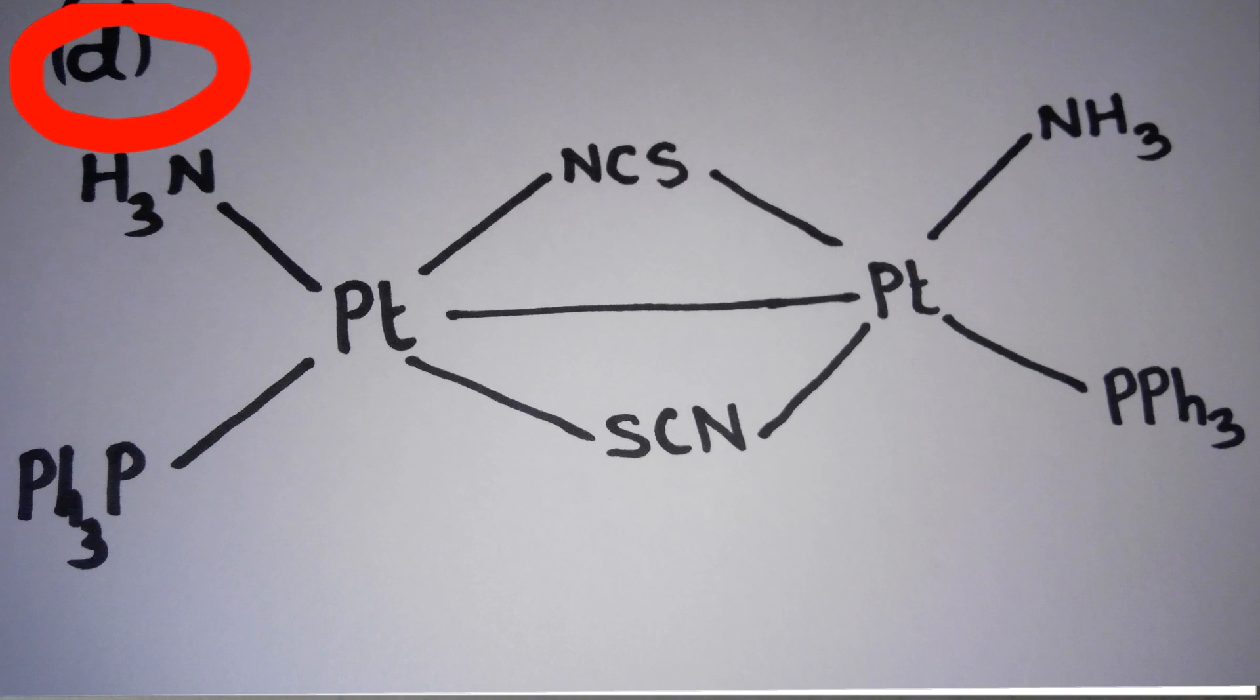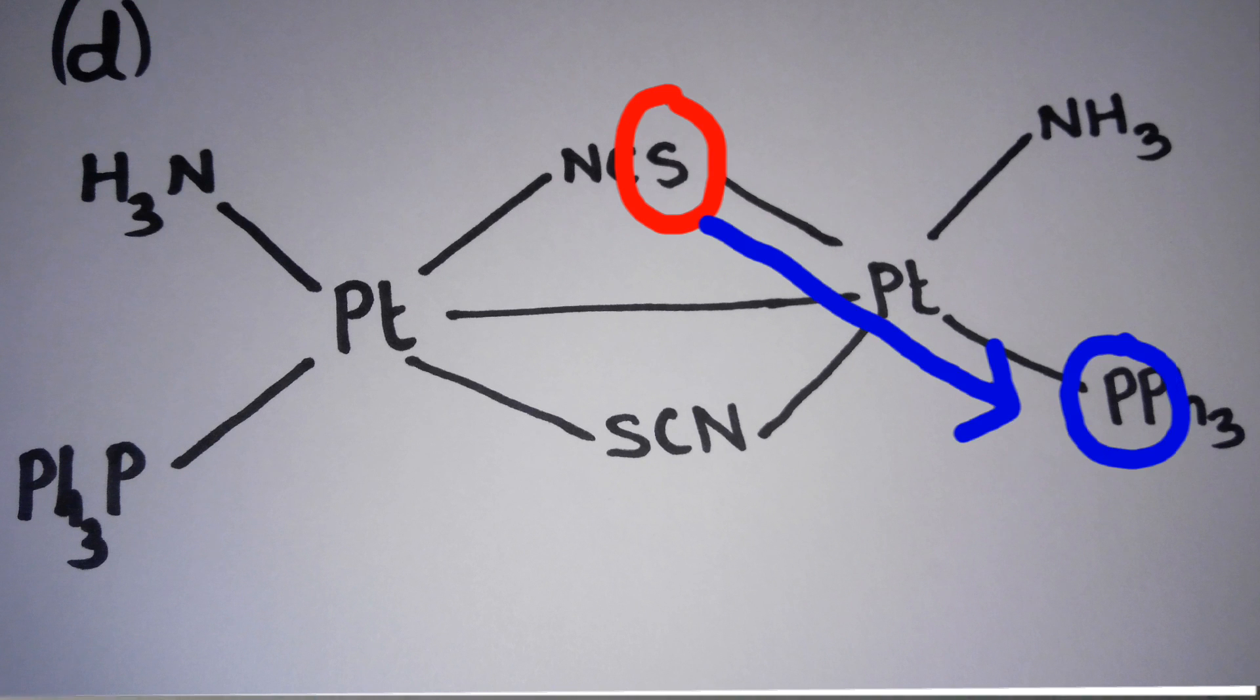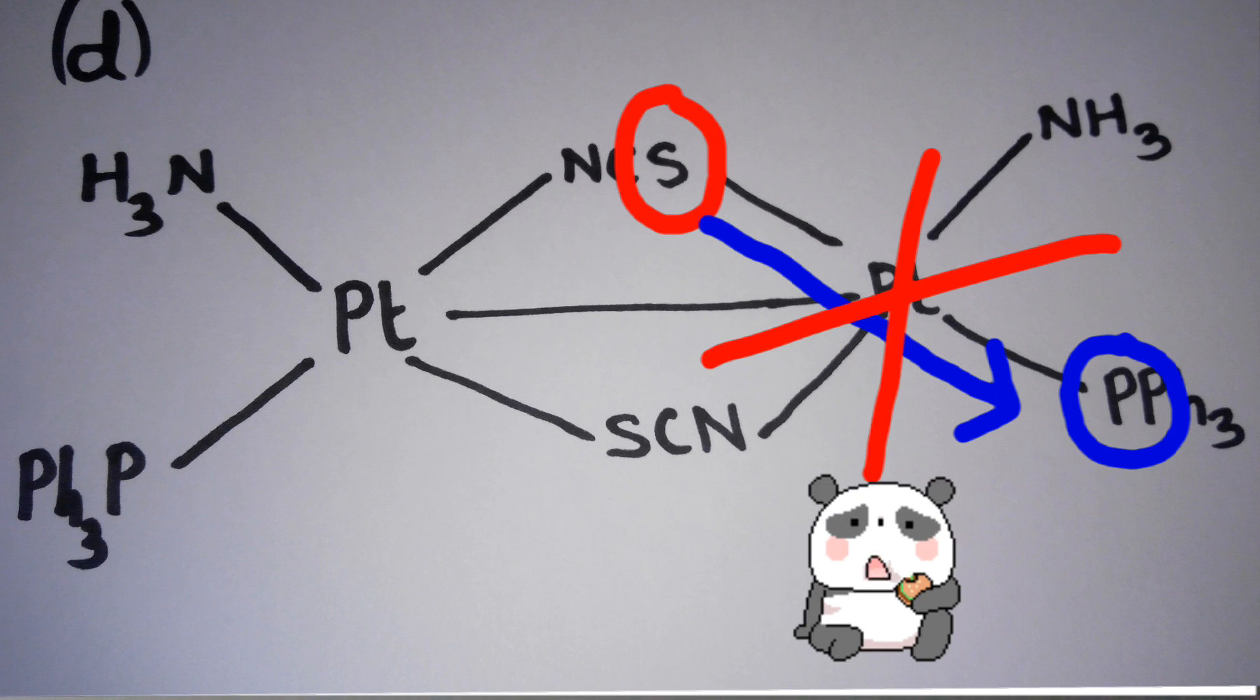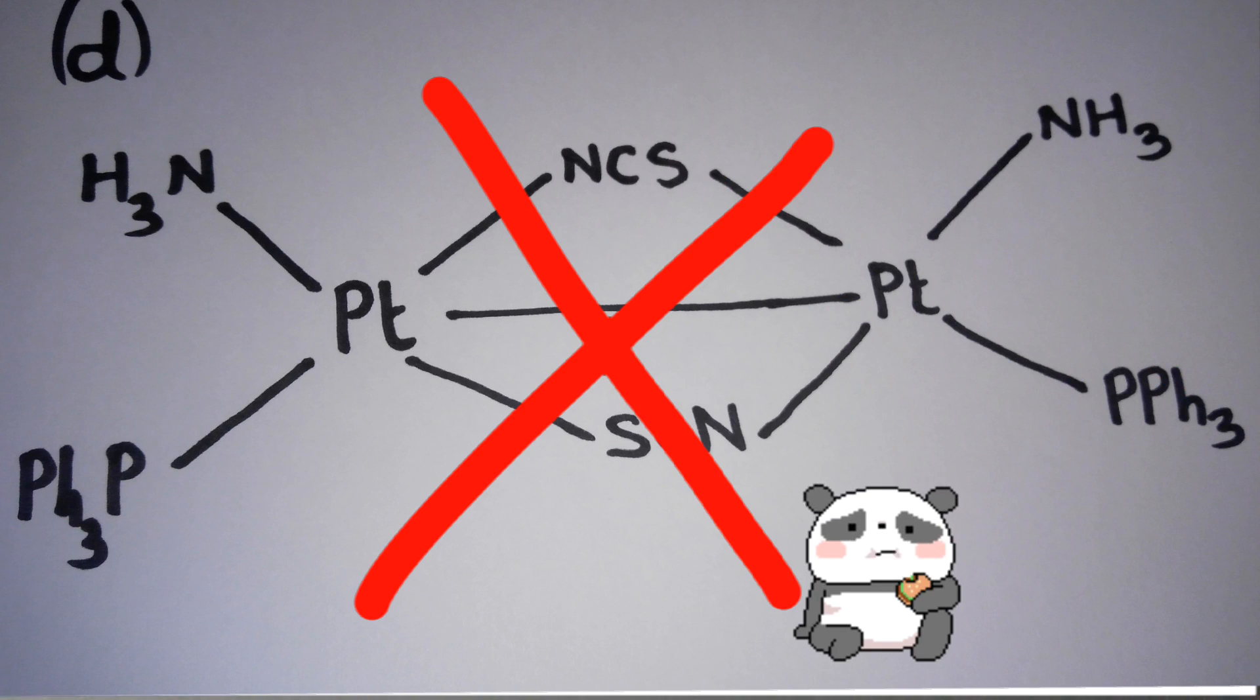In option D, this sulfur is trans to this phosphorus. Again it is unstable, and option D becomes the wrong choice.